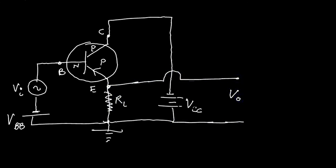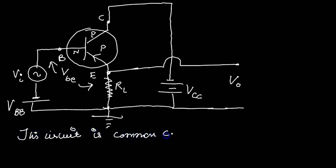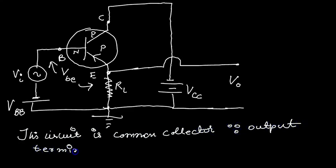The voltage is between the base and the Emitter, denoted VBE. This circuit is Common Collector, as the output is taken across the Emitter terminal.